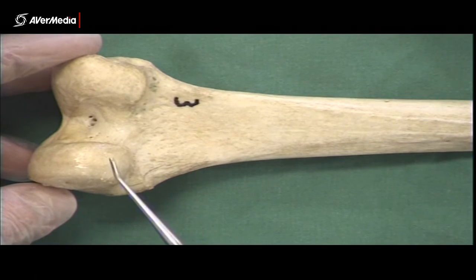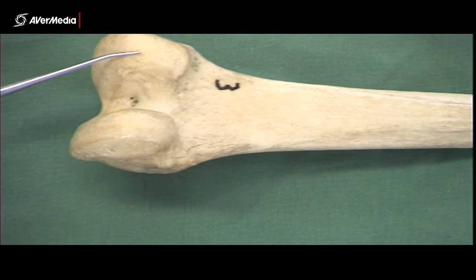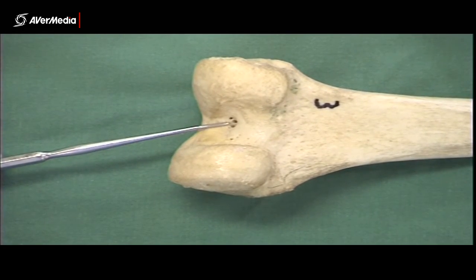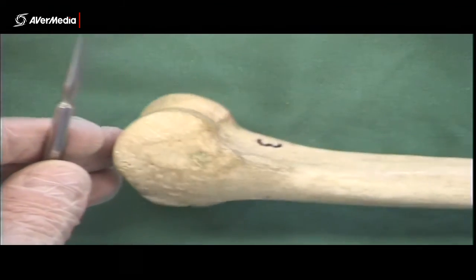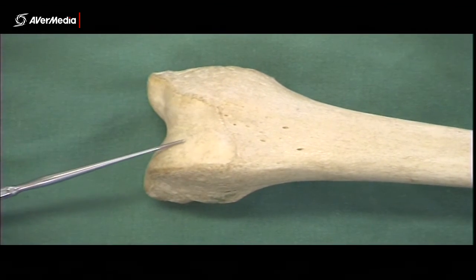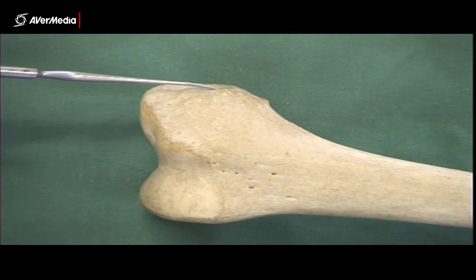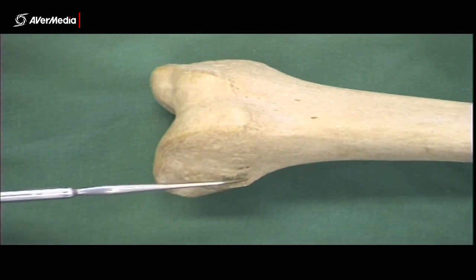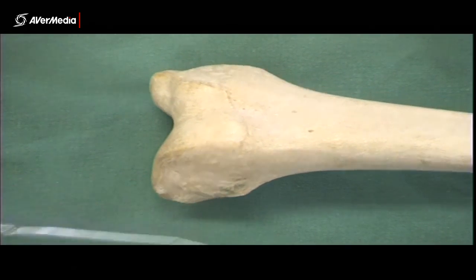Distal to that we have the medial condyle and the lateral condyle, and in between them we have the intercondylar fossa. On the anterior surface we have the patellar surface. And of course medially we have the medial epicondyle — the bit that sticks out the most — and laterally we have the lateral epicondyle, which also sticks out.